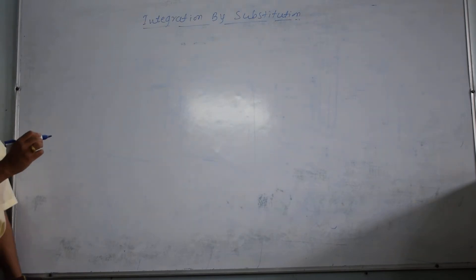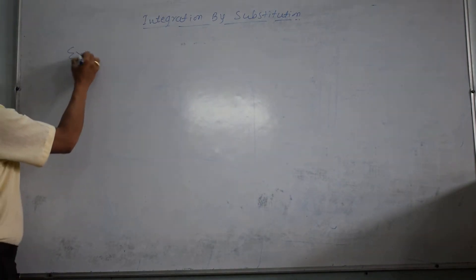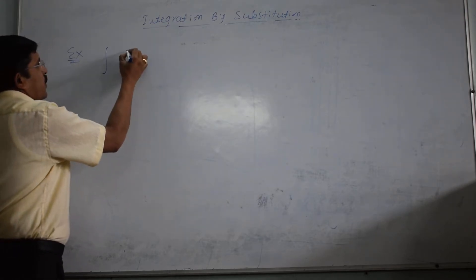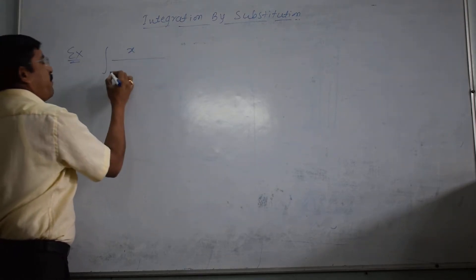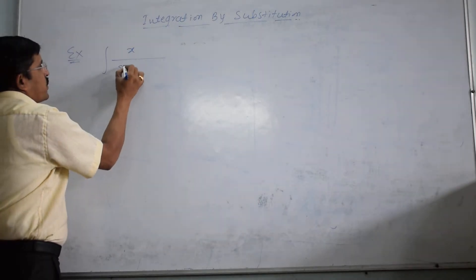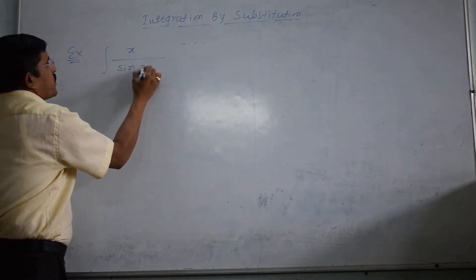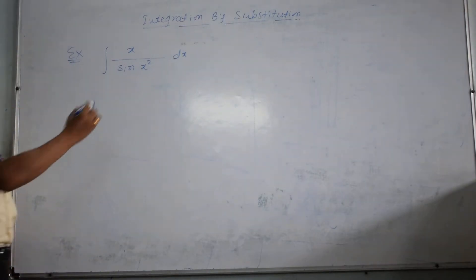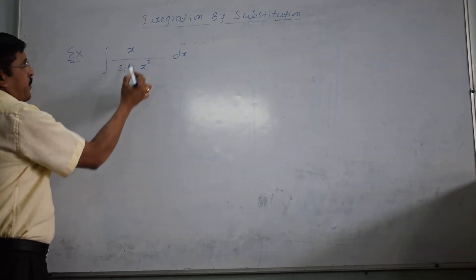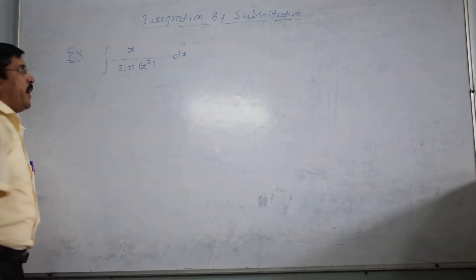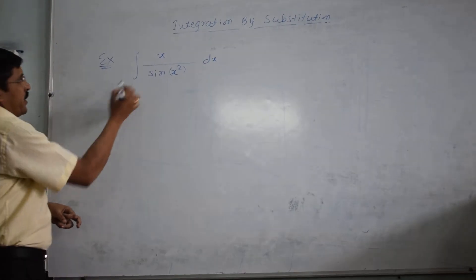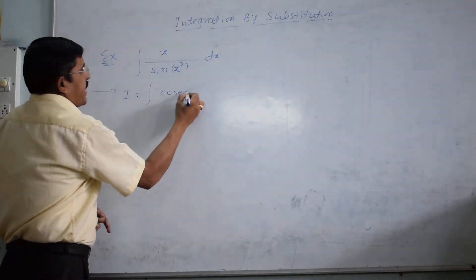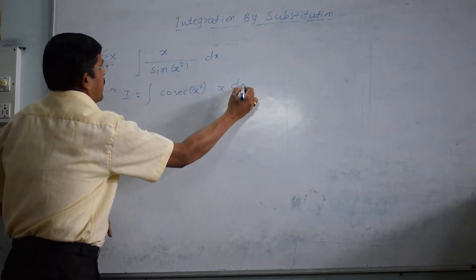Consider one example. Integral of x divided by sin(x²) dx. If you observe, integral x upon sin(x²) dx. This sin is in the denominator. You can write this as cosec(x²) into x dx.